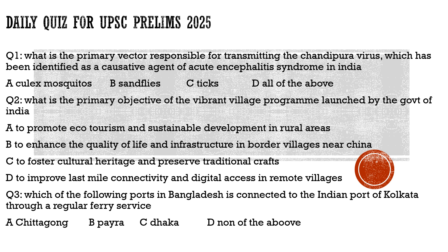Without any delay, let's start. Question one: What is the primary vector responsible for transmitting the Chandipura virus, which has been identified as a causative agent of Acute Encephalitis Syndrome in India? We discussed this in our current affairs session — children have died because of this virus. Encephalitis Syndrome refers to inflammation of the brain.